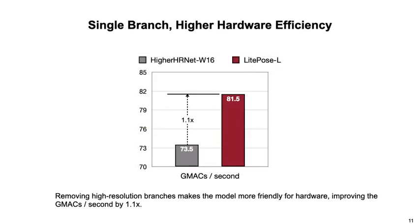Hardware efficiency is another advantage of the single-branch architecture. As less fragmentation is introduced, LightPOS can run at higher speed with similar MACs compared with the HRNet family.